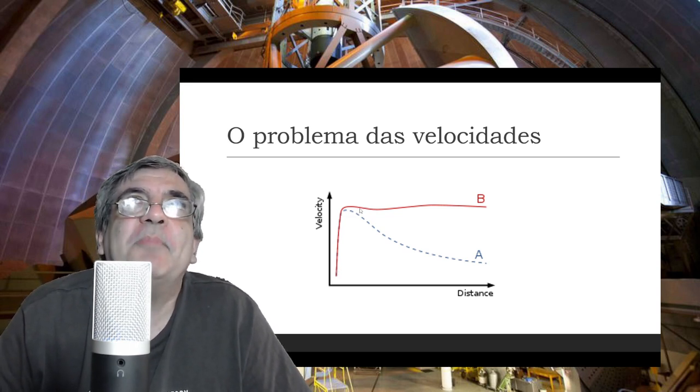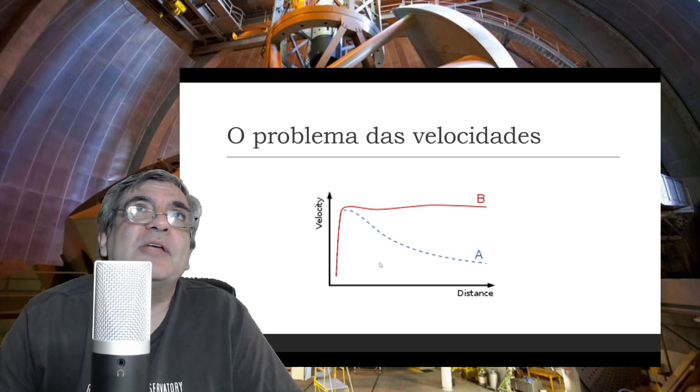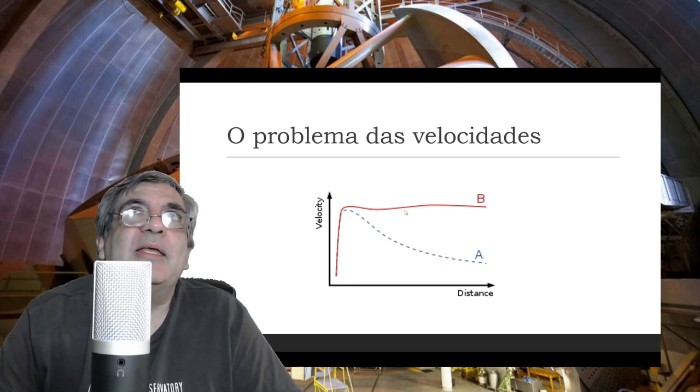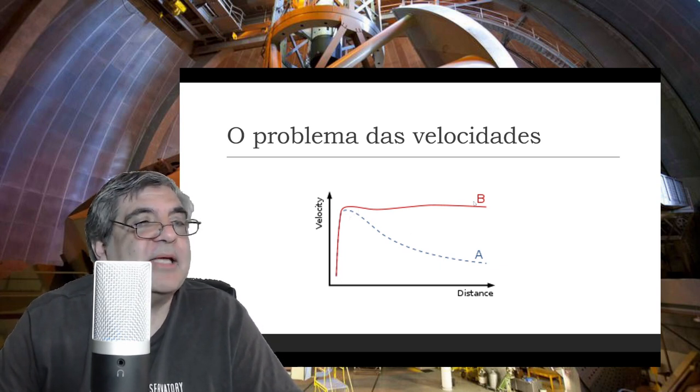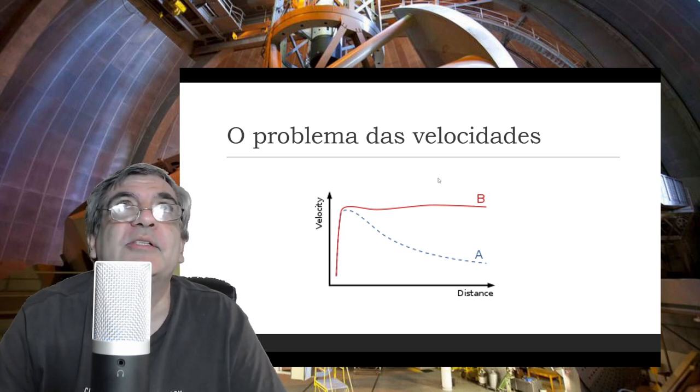Isso aqui é o que é esperado segundo a lei de Newton. A velocidade deveria ser decrescente conforme você se afasta. E o que a gente observa na prática é que isso não acontece. É como se a lei de Newton não funcionasse em dimensões muito grandes, as leis de Newton.